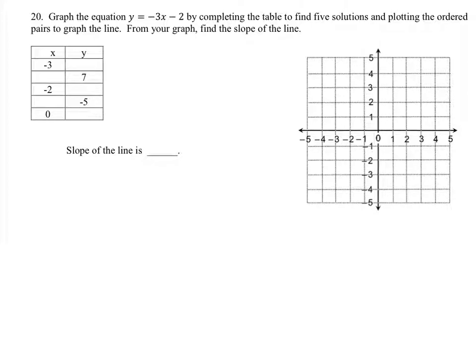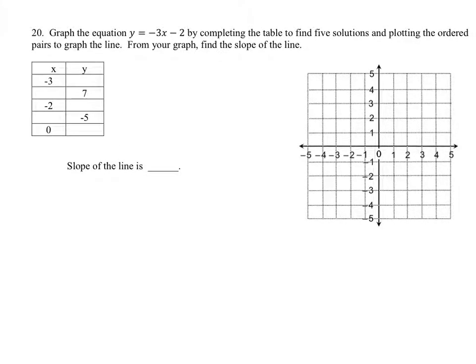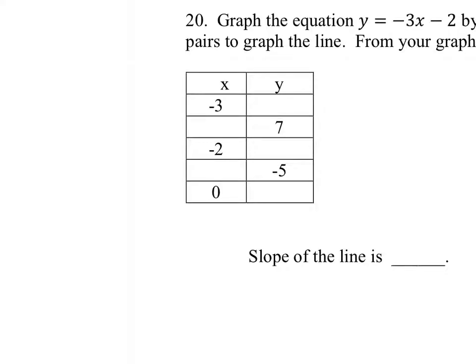So let's focus on creating some of our ordered pairs first. Not all of them will fit on the graph, we know that because the y is 7, and the y only goes up to 5 right here. Alright, so let's find these other points. Let me zoom in. So this is our equation, y equals negative 3x minus 2, and the first value we have here is an x value, so I'm going to replace x with that value, which is negative 3.